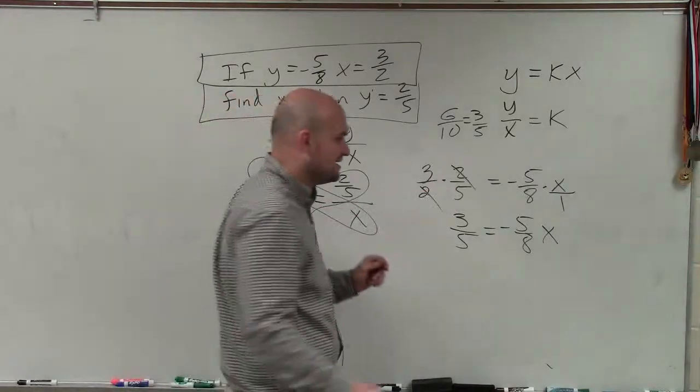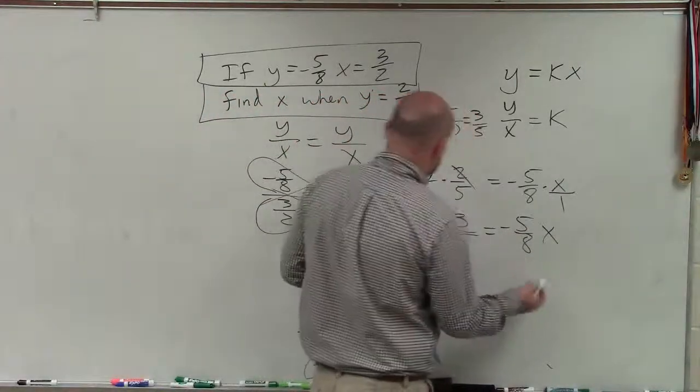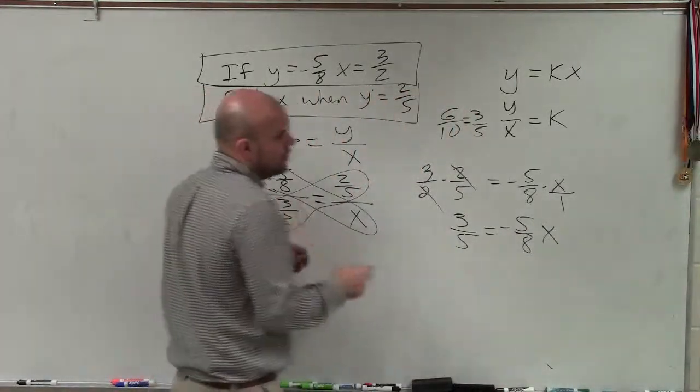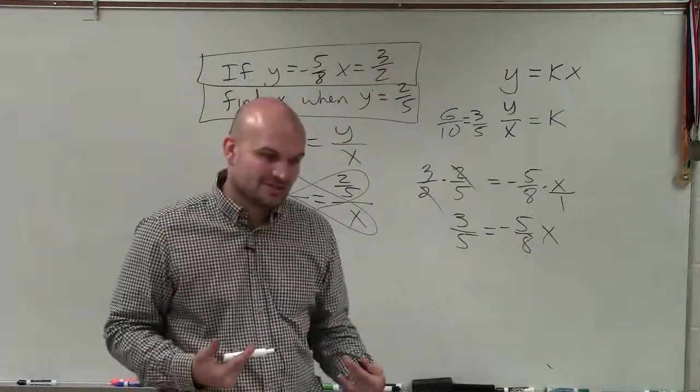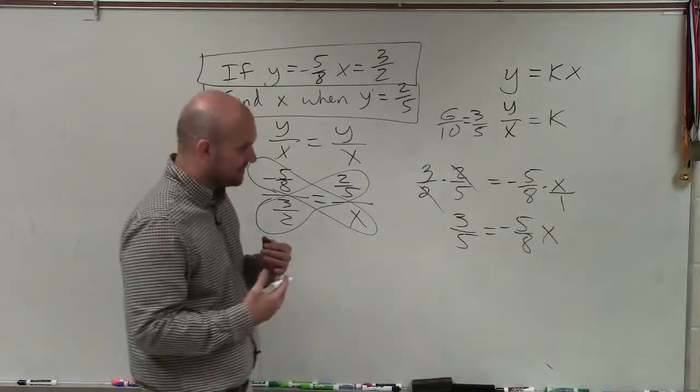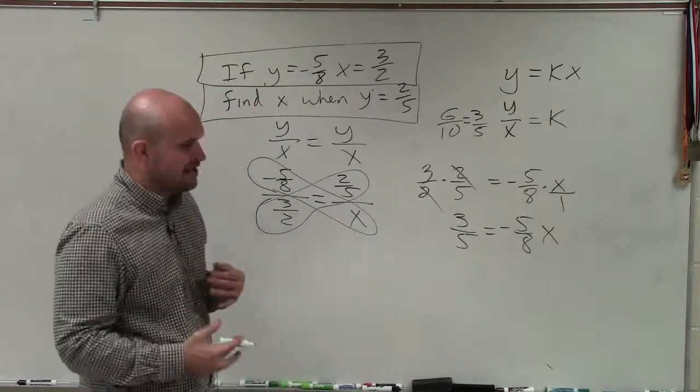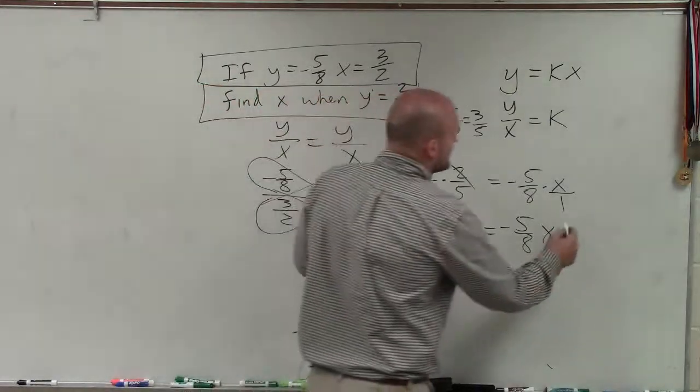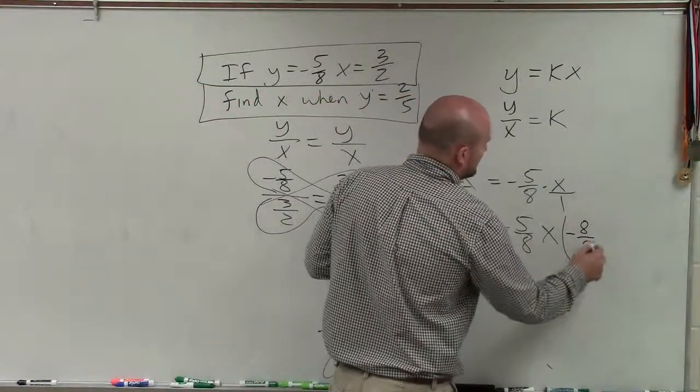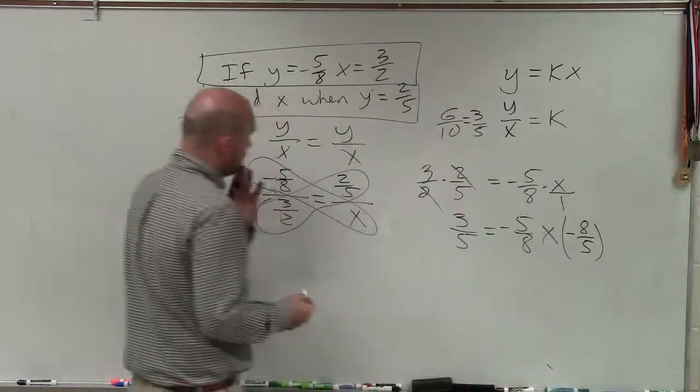So to undo multiplying by negative 5 eighths to solve for x, because that's what we want to do is find or determine, we need to divide by negative 5 eighths. But we really don't want to divide fractions. And so instead of dividing fractions, we multiply by the reciprocal, which is going to produce the same operation.